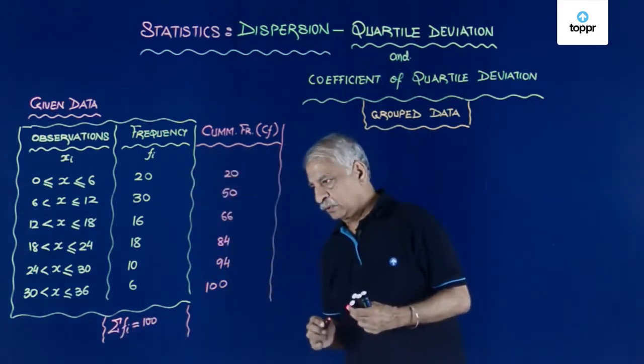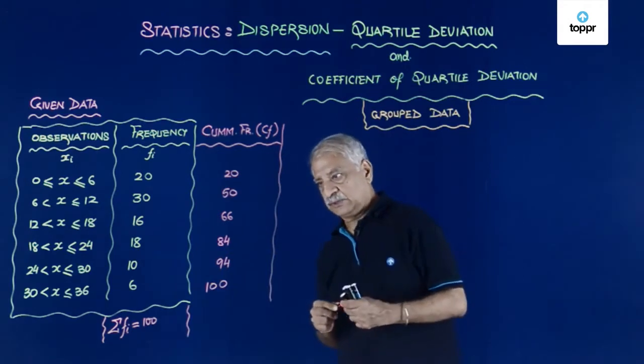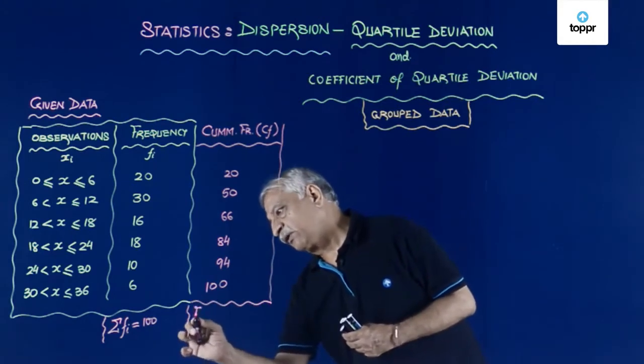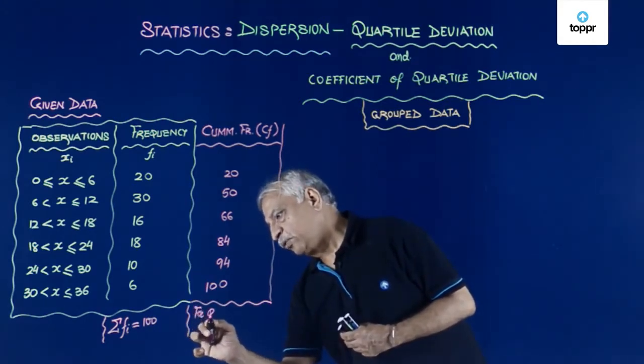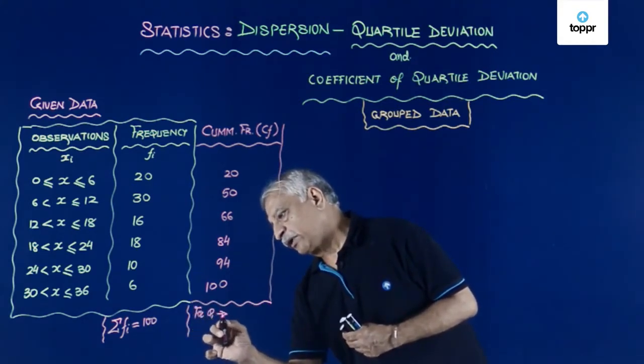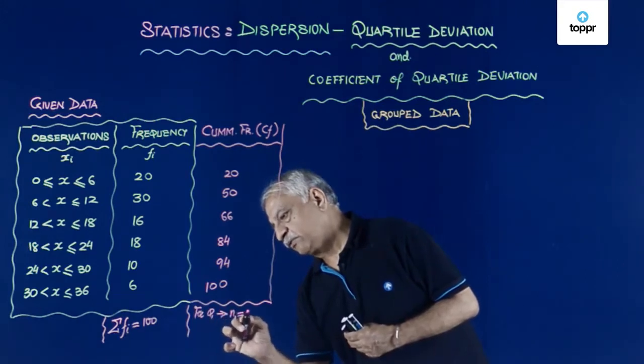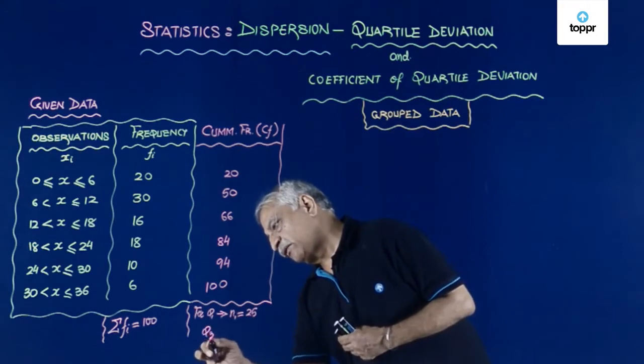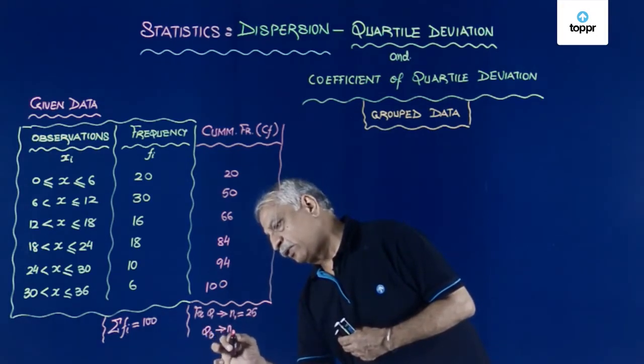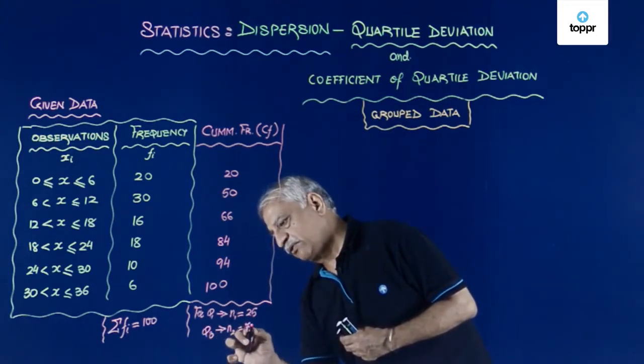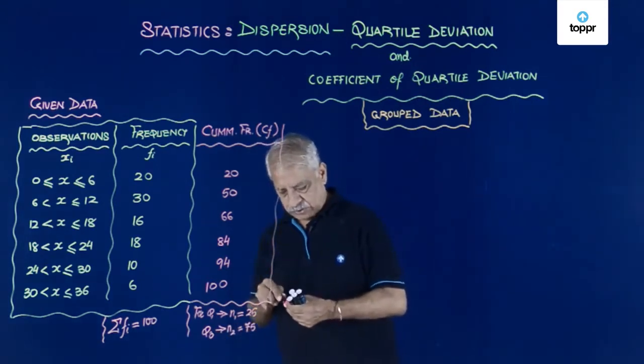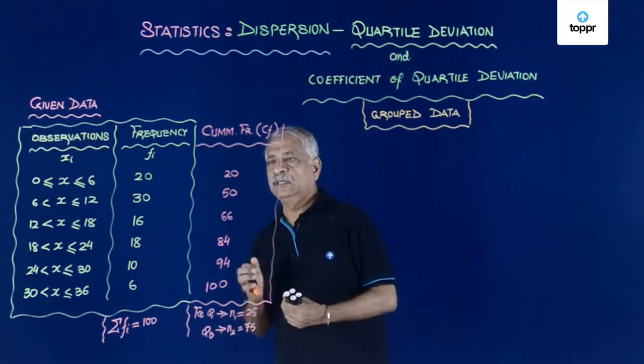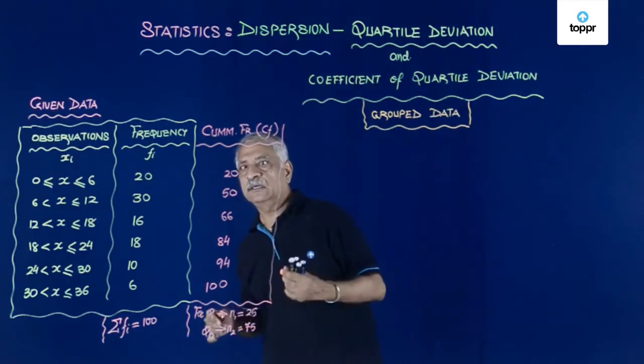From this we get for Q1, I have N1, this is equal to 25, and for Q3, I have N2, this is equal to 75. Now once we do that, then I see which are the quartile classes.